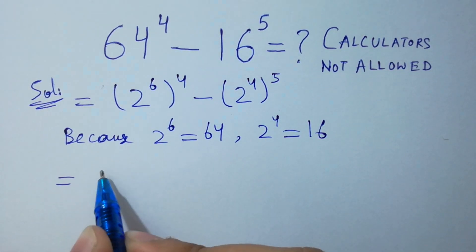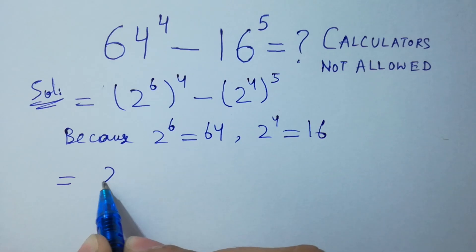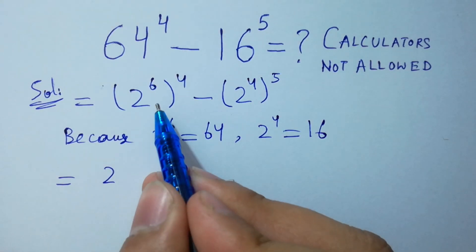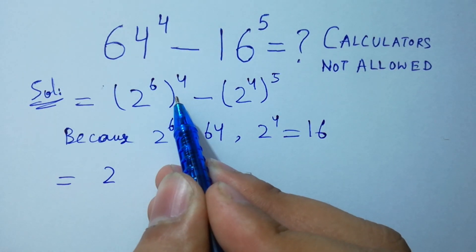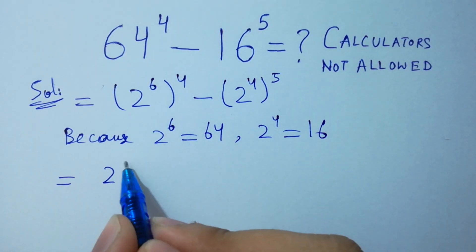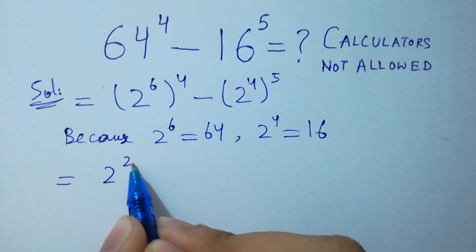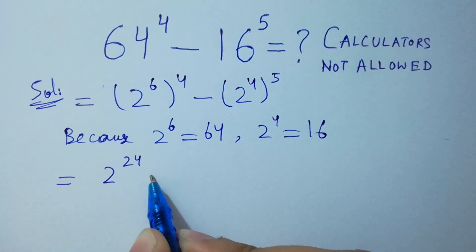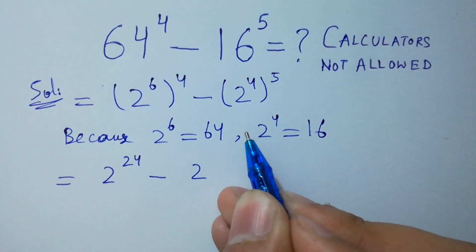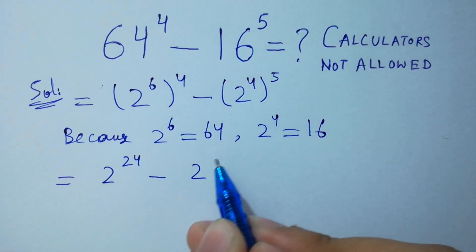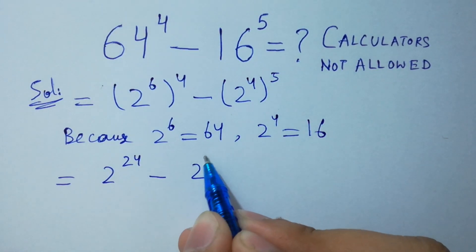Next step: 2 to the power 6 times 4 equals 24, minus 2 to the power 4 times 5, which equals 20. So we have 2 to the power 24 minus 2 to the power 20.